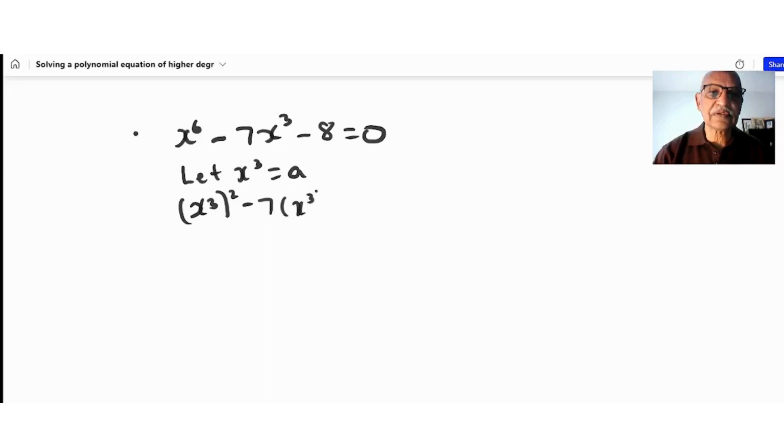This becomes a^2 - 7a - 8 = 0, a simple trinomial. The sum is -7 and the product is -8.